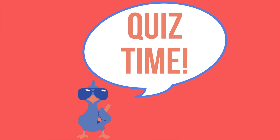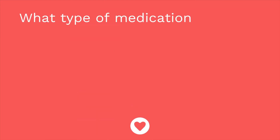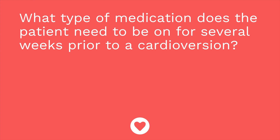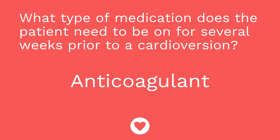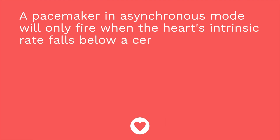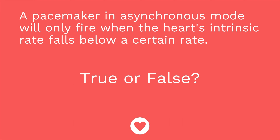Time for a quiz — I have three questions for you. First question: what type of medication does the patient need to be on for several weeks prior to a cardioversion? The answer is an anticoagulant, because a cardioversion carries a risk of dislodging a clot. Question number two: a pacemaker in asynchronous mode will only fire when the heart's intrinsic rate falls below a certain rate — true or false? The answer is false. A pacemaker in synchronous mode will only fire when the heart rate falls below a certain rate. A pacemaker in asynchronous mode will fire regardless of the heart's intrinsic rate.